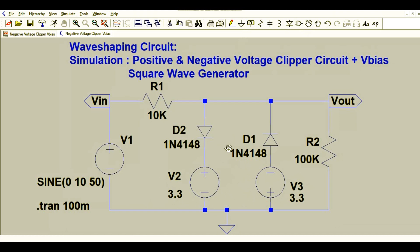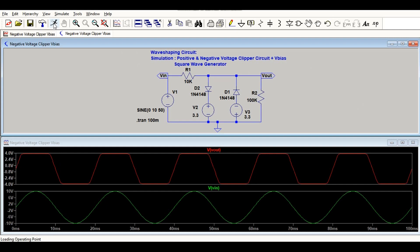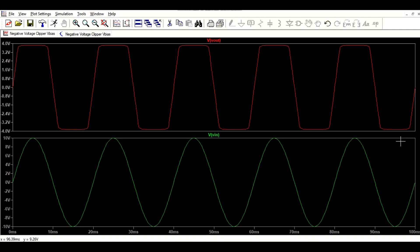Now you have added a 3.3 DC voltage in positive as well as negative clipper circuit. Now let me run the simulation. Let me zoom it. You can see you are getting now 4 volts positive amplitude and minus 4 volts negative amplitude.